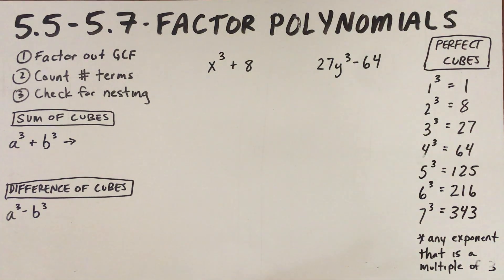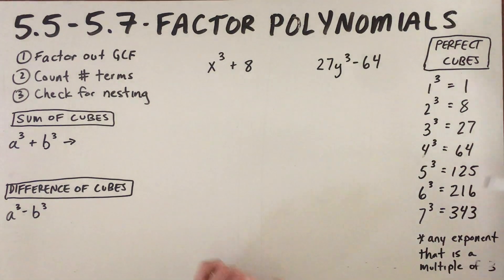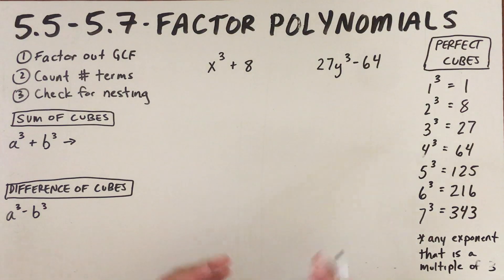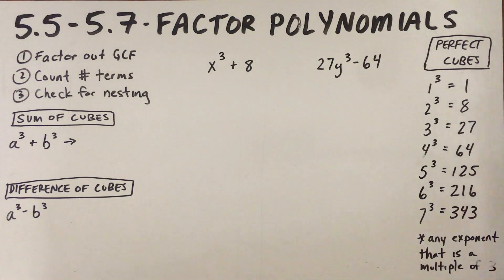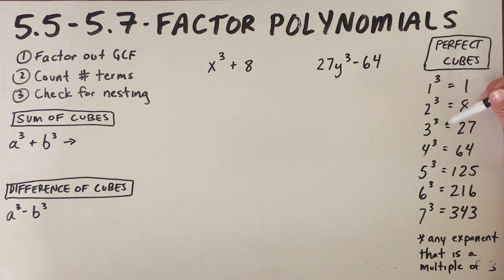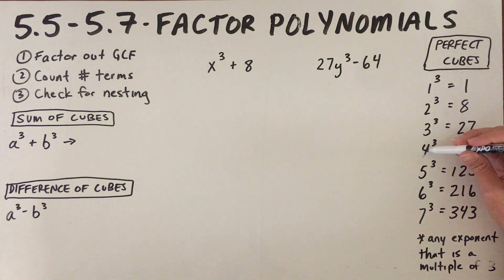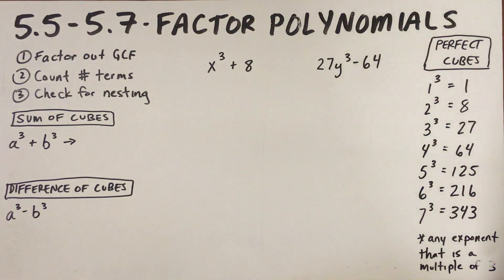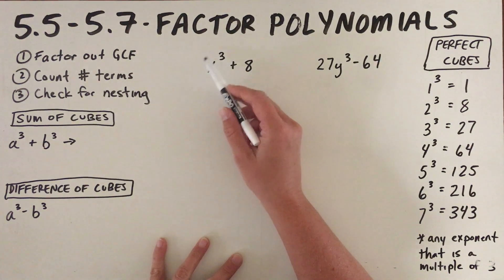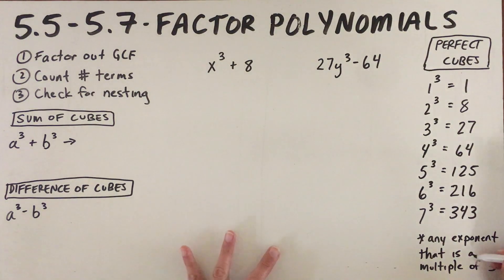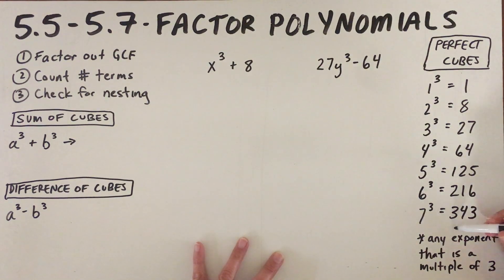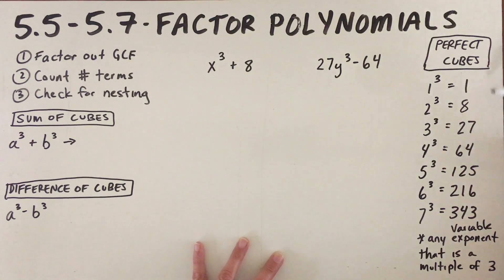First we need to talk about what is a perfect cube. A perfect cube is any number that can be broken down to the same factors multiplied together three times. So one times one times one is one, two times two times two is eight, three times three times three is 27, and so on. I've listed up until seven here. All of these constants are perfect cubes — these numbers in this column are the perfect cubes.